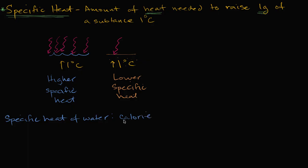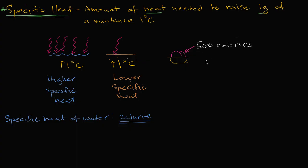You've seen this word before when you've wanted to cut calories or looked at nutritional labels on food. There's one clarification: the calorie that people talk about on nutritional labels — how many calories are in food — is actually kilocalories. So if someone hands you a bowl of ice cream and tells you it's 500 calories, in terms of specific heat it's actually 500 kilocalories.